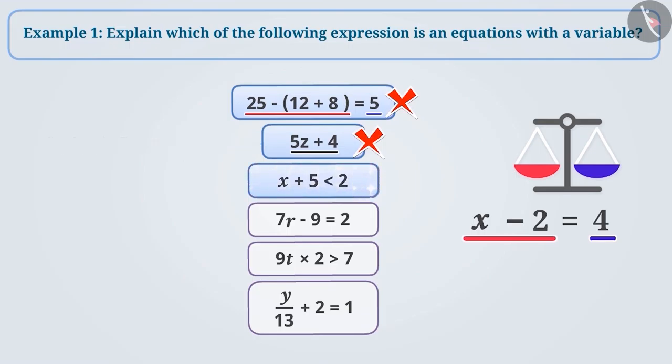x plus 5 lesser than 2. It has two sides but they are not equal. So, this is also not an equation.